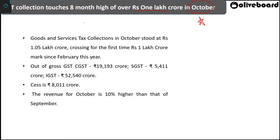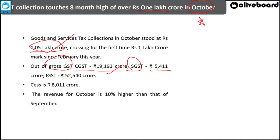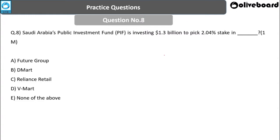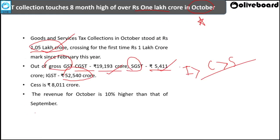GST collection in October stood at ₹1.05 lakh crore. The breakdown: Central GST contributed around ₹19,193 crore; State GST contributed around ₹5,411 crore; Integrated GST contributed around ₹53,540 crore. Integrated GST has the highest share, followed by CGST, then SGST. CESS contributed around ₹8,011 crore — more than SGST.